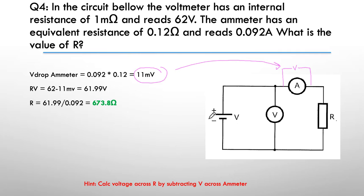We know the total voltage across the circuit was 62 volts—we were told that in the question. So the voltage across R simply has to be 62 minus 11 millivolts. Of course it's going to be a very small difference but nevertheless, so that gives me 61.99 volts across the resistor.